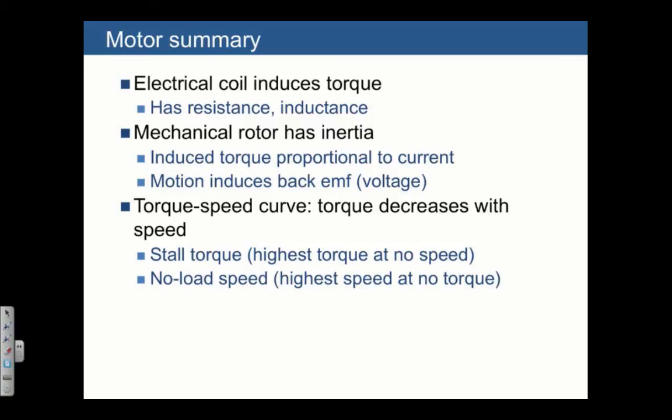Let's quickly summarize what we learned about motors. A motor has an electrical coil which induces a torque, and that coil also has resistance and inductance. The mechanical rotor has inertia, and its torque that's induced by the coil is proportional to the current flowing through the coil. The motion of that rotor also induces a backwards voltage that acts on the coil. We also describe the torque-speed curve, which says that the torque decreases as a function of speed. There's a stall torque, which describes the highest torque that can be produced, which also occurs at zero speed. And we also describe the no-load speed, which is the highest speed that can be produced, which occurs when there's zero external torque acting on the system.